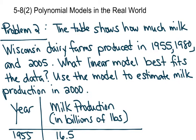In problem two, it says the table shows how much milk Wisconsin dairy farms produced in 1955, 1980, and 2005. What linear model best fits the data? Use the model to estimate milk production in 2000.